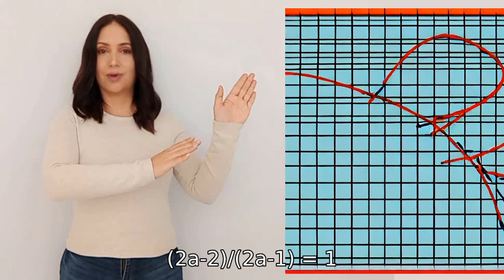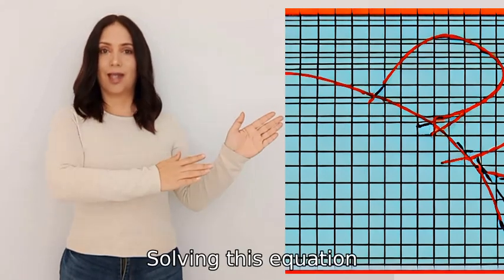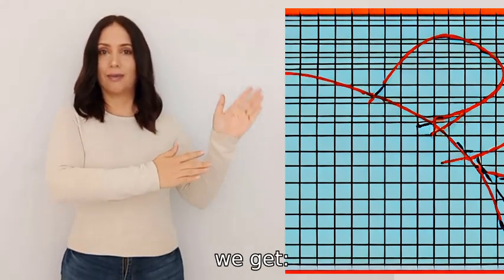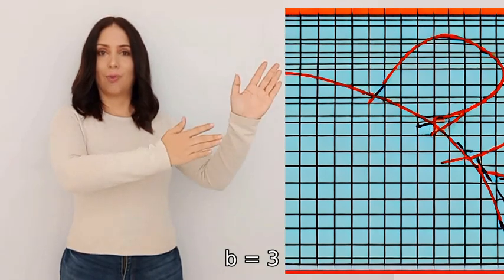Therefore we have (2a-2)/(2a-1) = 1. Solving this equation, we get a = 3, b = 3, and a = 0, b = 0.